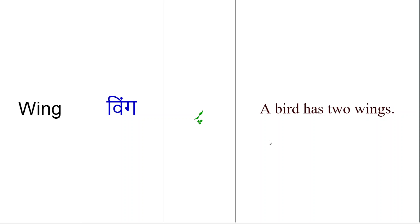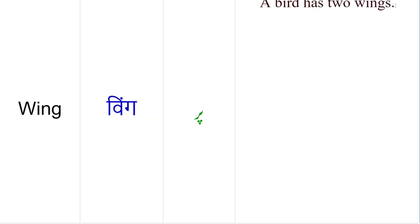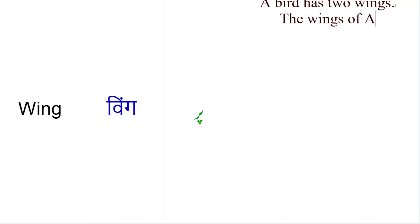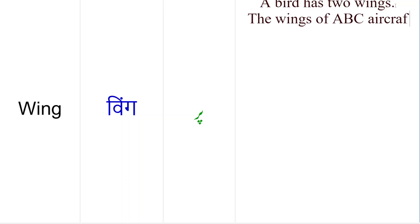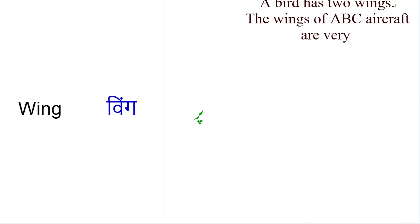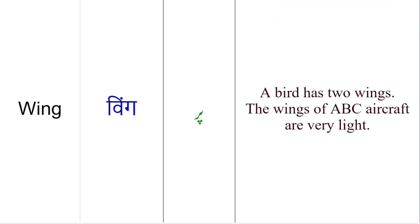Jaise hum yaha pe keh saktay hain: 'The wings of this ABC aircraft are very light' — ke jo ABC jahaz ke par hain woh bhoot hulke hain. 'The wings of ABC aircraft are very light.' Iske alawah doostho, wing ke noun meanings ko use karte hain aur seekhte hain.